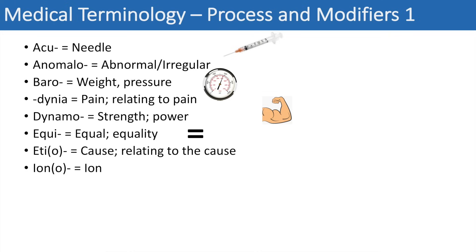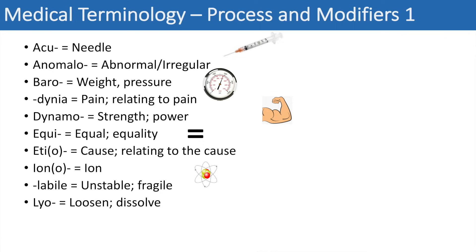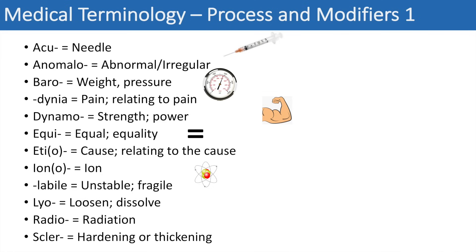The next prefix is iono, which relates to ion. Another suffix is -labile, which means unstable or fragile. Another one is -lyo, which means loosen or dissolve. The prefix radio means radiation — you can think of radiotherapy, a treatment involving radiation. And another one is sclero, which means hardening or thickening — you can think of sclerosis or atherosclerosis.